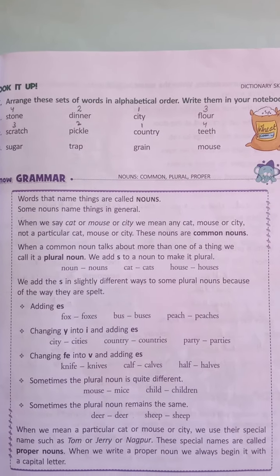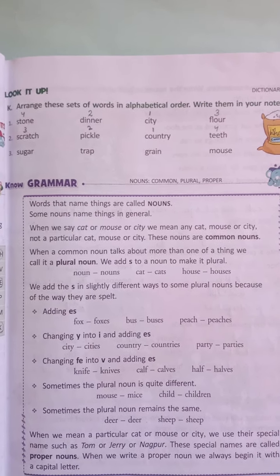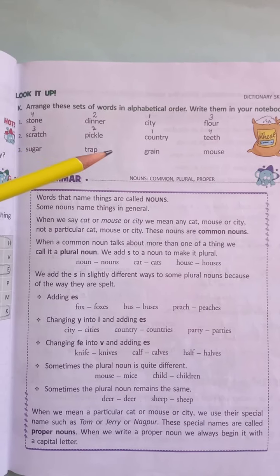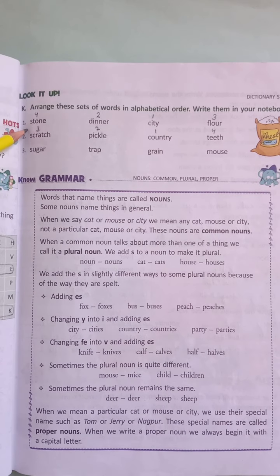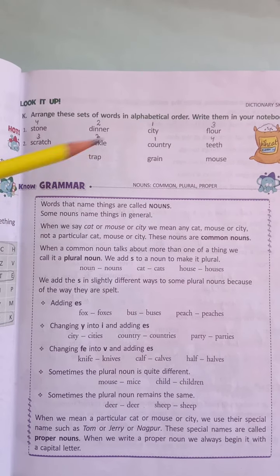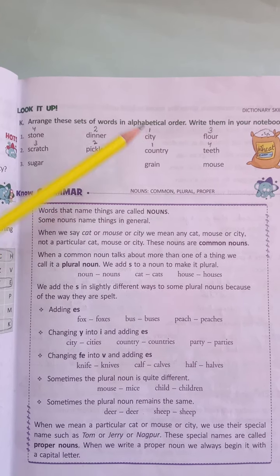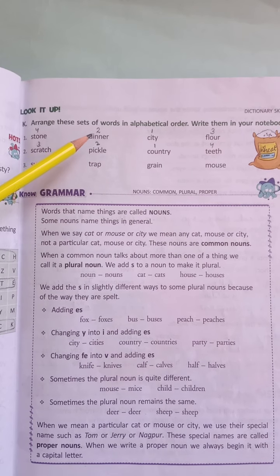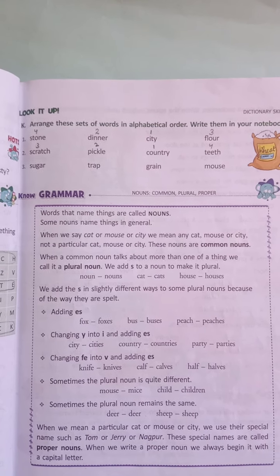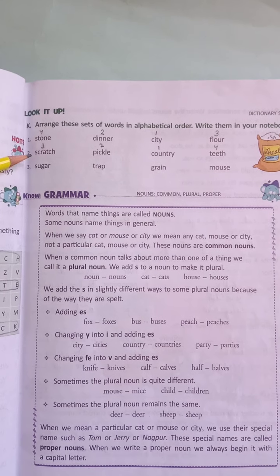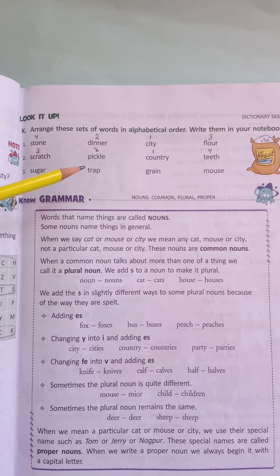Part K: Arrange these sets of words in alphabetical order in your notebook. First set: stone, dinner, city, floor. In alphabetical order: city, dinner, floor, then stone.